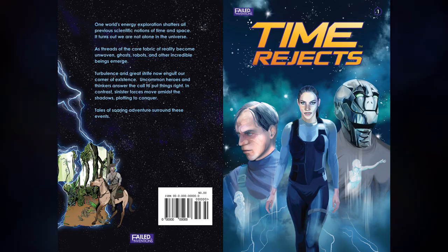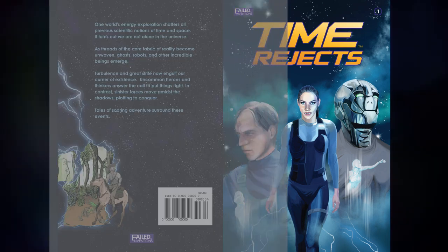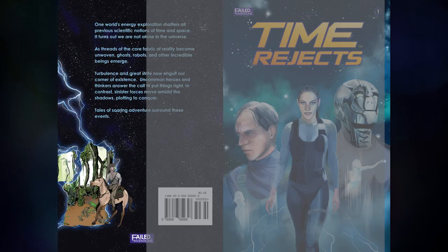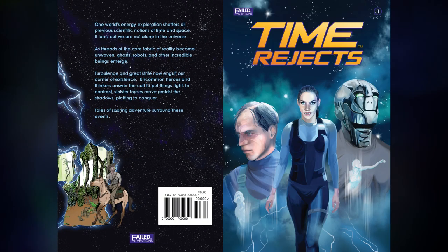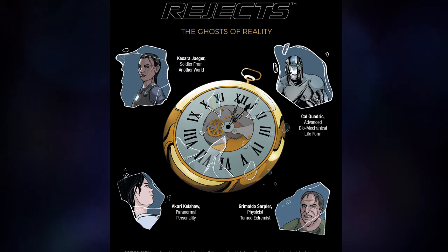Breaking down the elements of a self-published comic. First there is the cover and back cover. Then there's the barcode with an ISBN number.